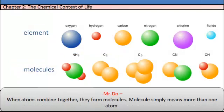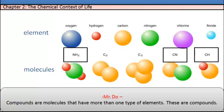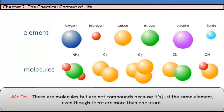When atoms combine together, they form molecules. Molecules simply mean more than one atom. Compounds are molecules that have more than one type of element. These are compounds. These are molecules but are not compounds because it's the same element, even though there are more than one atom.